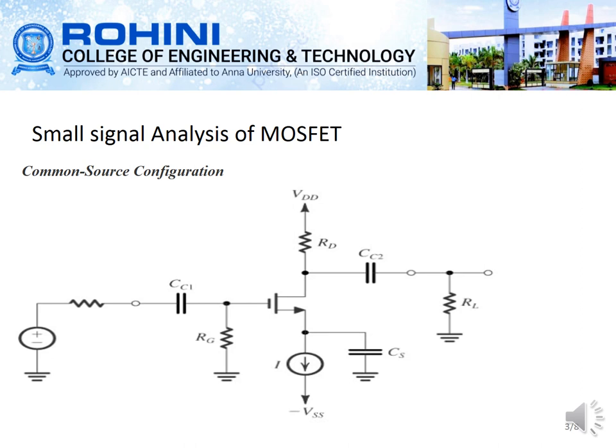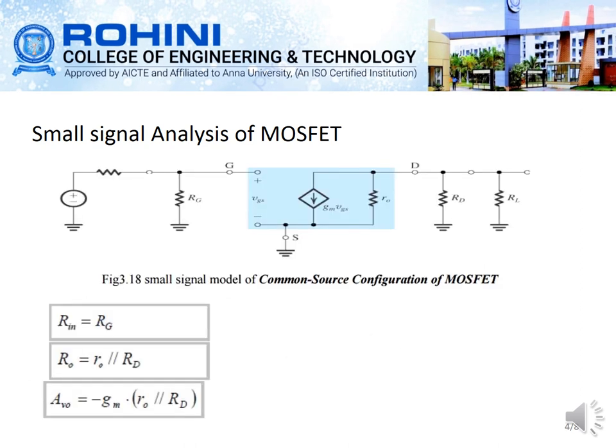There is RG, RD, and a source resistance capacitor placed at the source terminal — so three capacitors total. Here we are drawing the hybrid model of the common source amplifier for the fixed bias. You can see RG, the signal source resistance RS, the gate terminal, and the source is grounded. The current flowing from drain to source is indicated as GM into VGS in the downward direction, and R naught is the small signal resistance. This is the small signal model, and RD and load resistance RL are also shown.